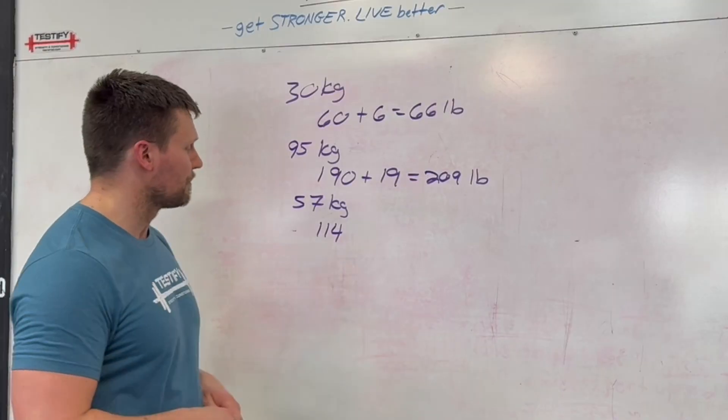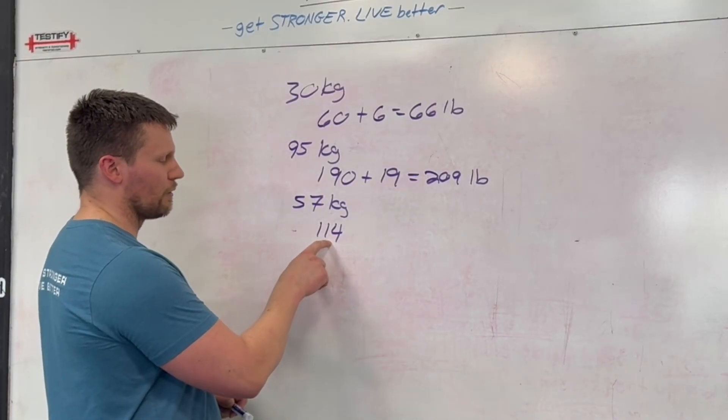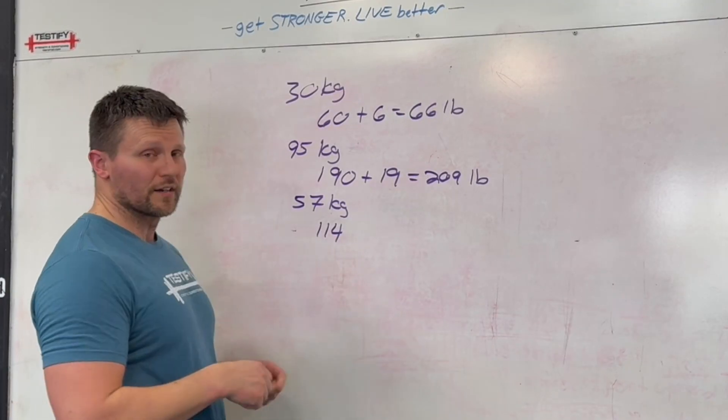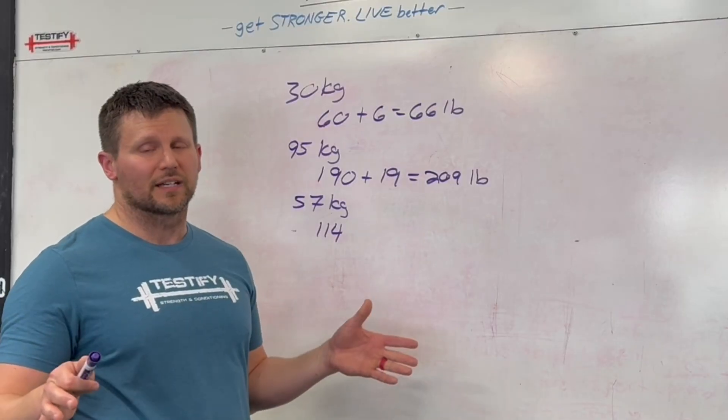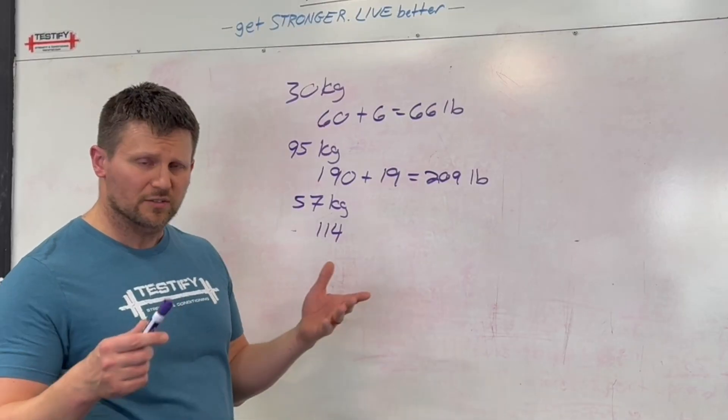The next step is to find 10%. So again, you're just moving the decimal over one place. So you get 11.4. Now, if all you need is an approximate answer, just ignore the .4. So we just have 11.